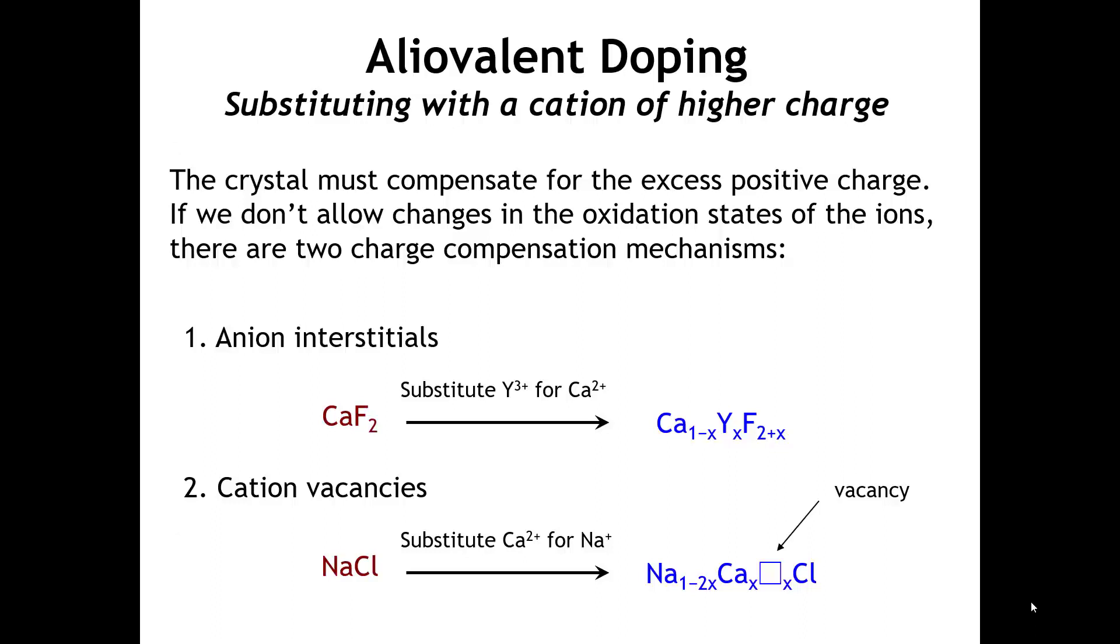Let's look at the impact of aliovalent doping in ionic compounds where the oxidation states of all the ions are fixed. On this slide, we see two examples of doping where we introduce an excess of positive charge. In the first example, if we replace a calcium 2-plus ion with a yttrium 3-plus ion, we would have too much positive charge. To balance that in the fluoride structure, we get anion interstitials—extra anions that would not be there in a perfect crystal.